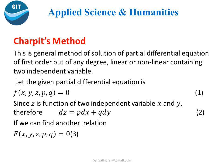Let us consider the given partial differential equation is of the form f(x, y, z, p, q) = 0. Since z is a function of two independent variables x and y, so dz = p dx + q dy.